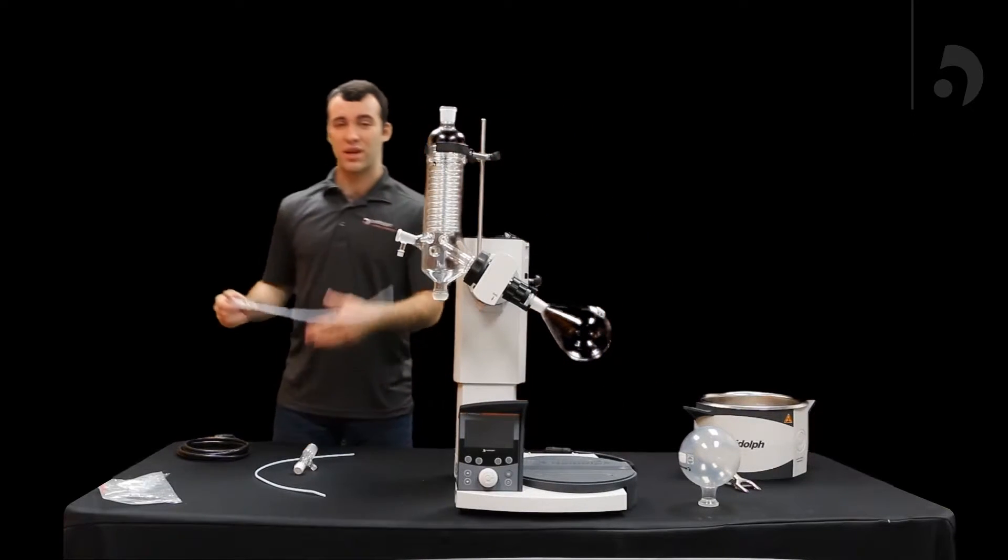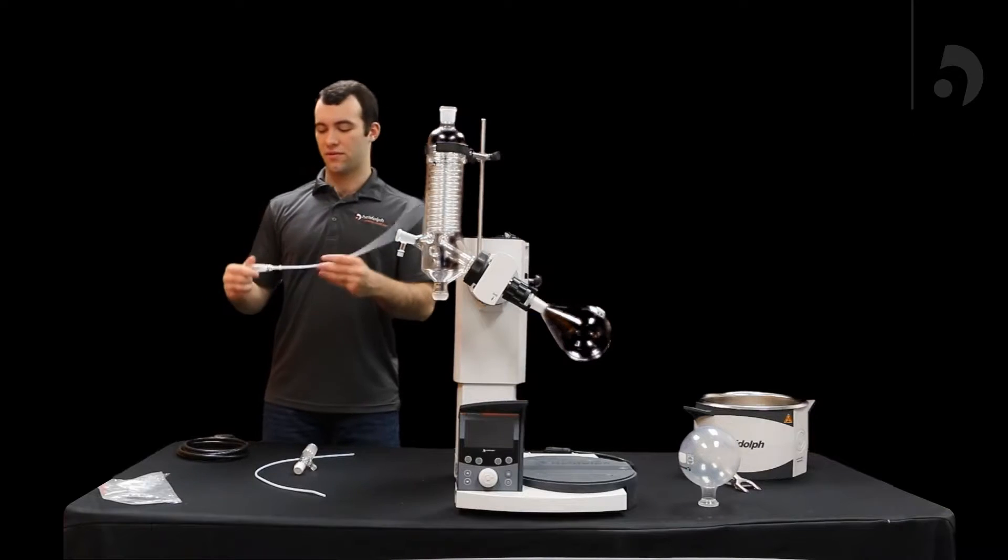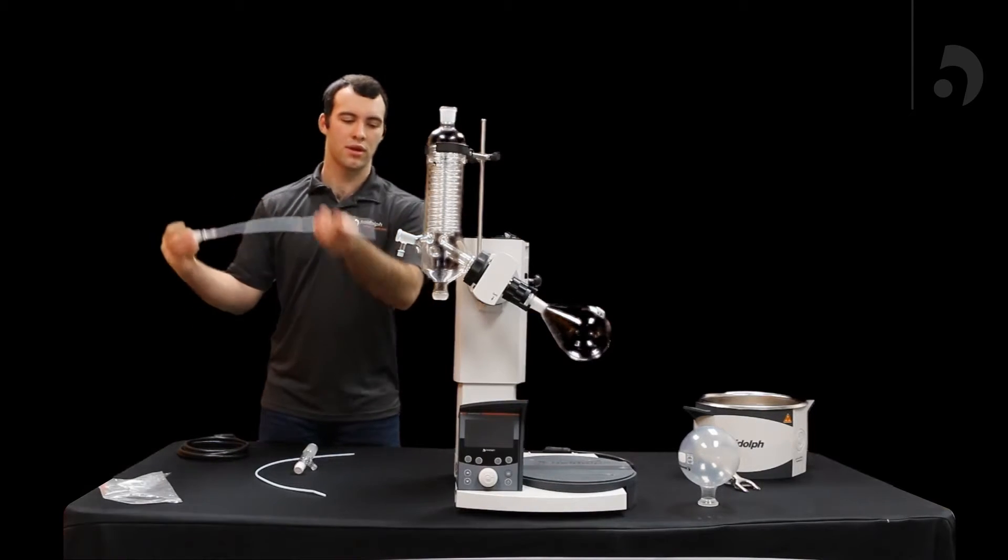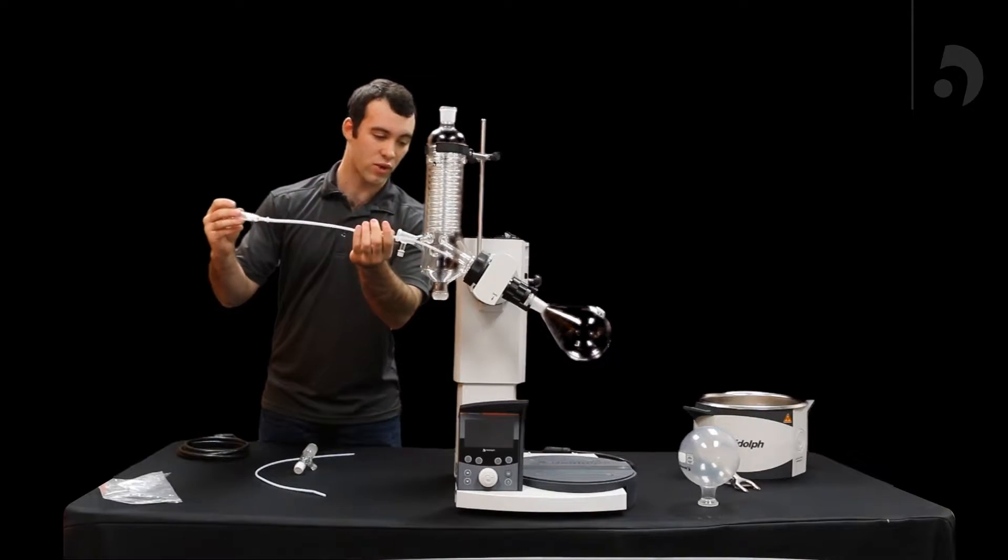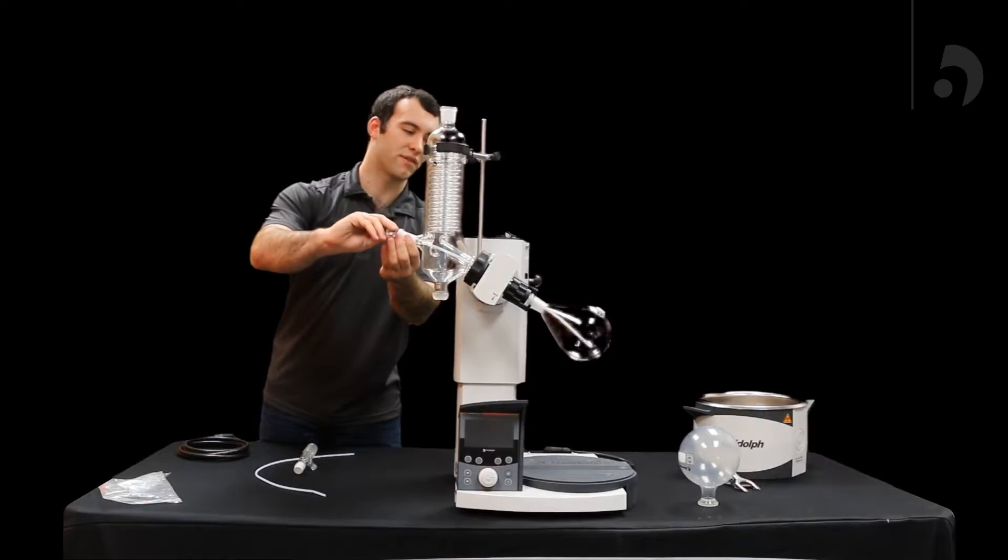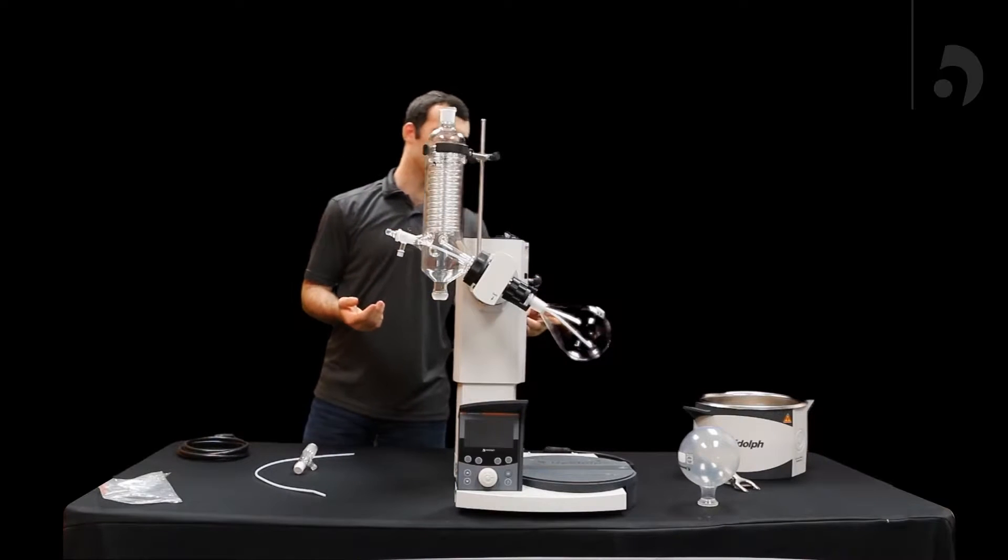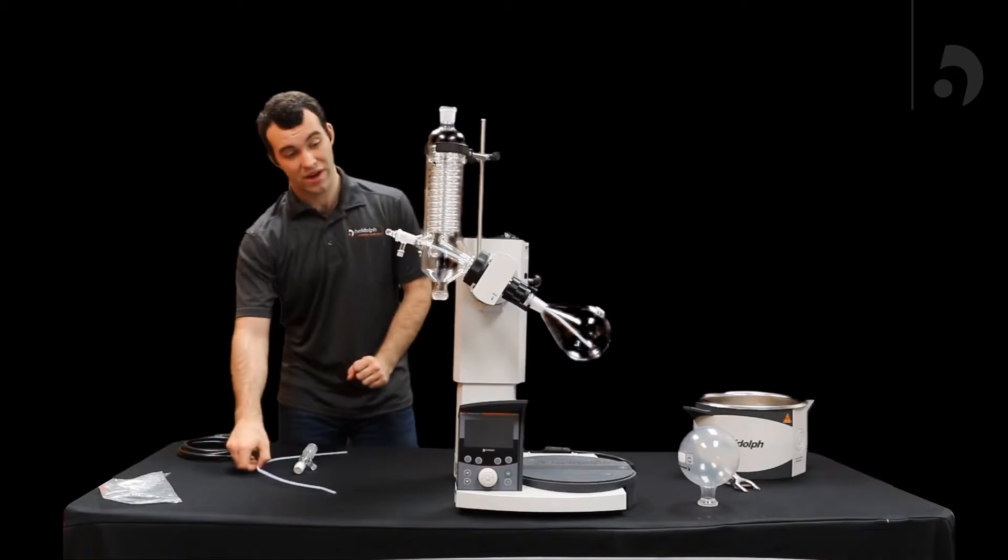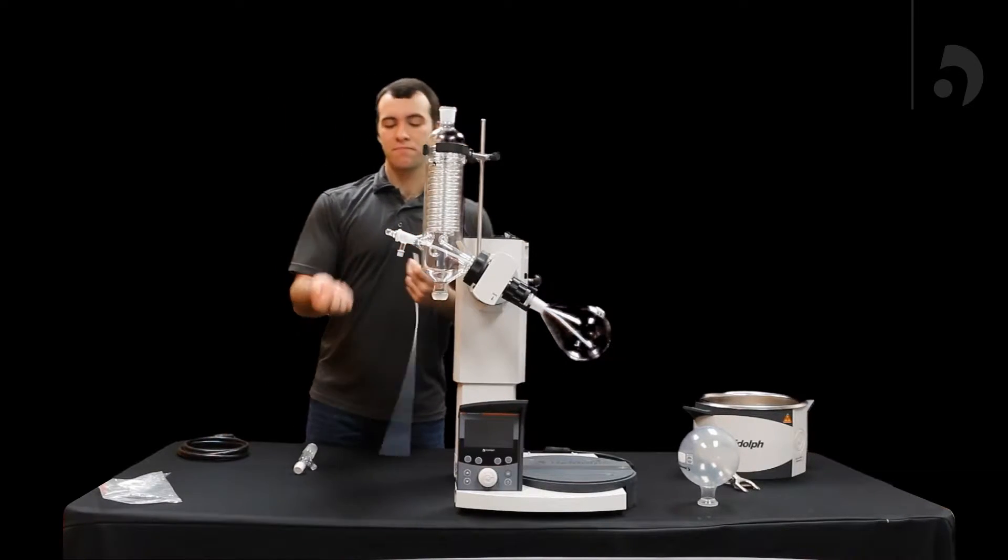Now, you're going to want to take the things that go into your condenser, first being your stopcock, slide that into the right side, all the way into your evaporating flask. If the tube is too long, you can always cut it a little shorter. No problem there. That's supposed to happen.